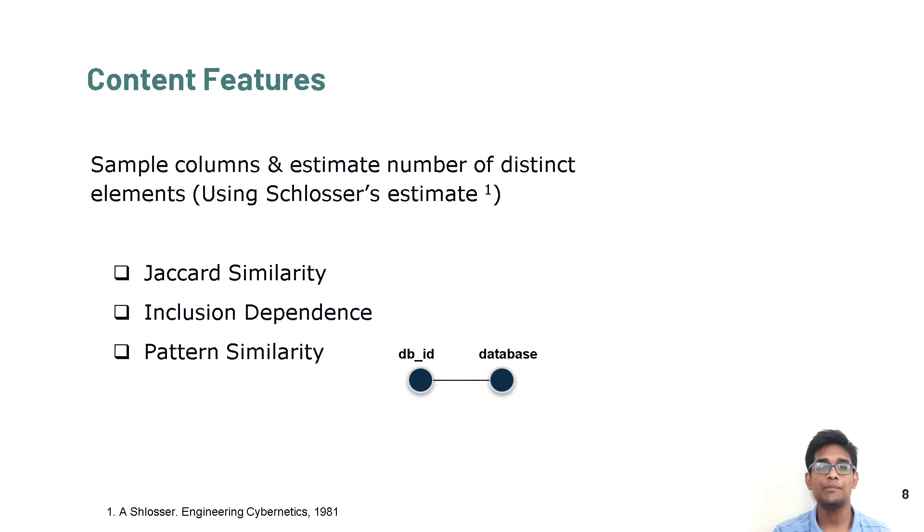Pattern similarity is helpful in column pairs containing unique identifiers. We mask the hexadecimal characters from the columns, and then estimate the jacquard score. This is because overlap between samples collected from columns containing unique identifiers is expected to be low. Since the intersection between two numeric column pairs, like error count and memory counter do not signify relevance, we use these content-based features only for textual columns.